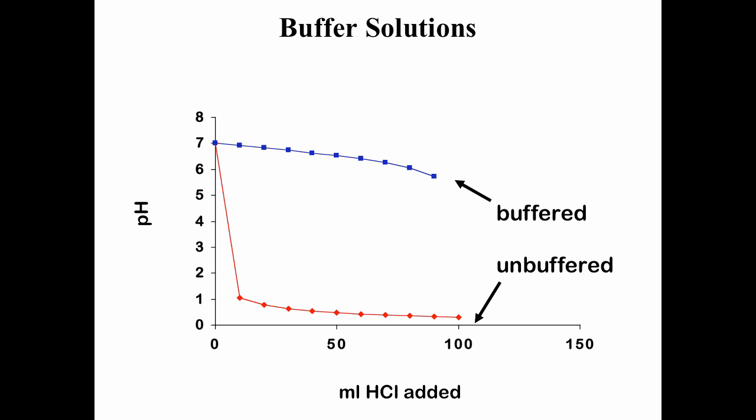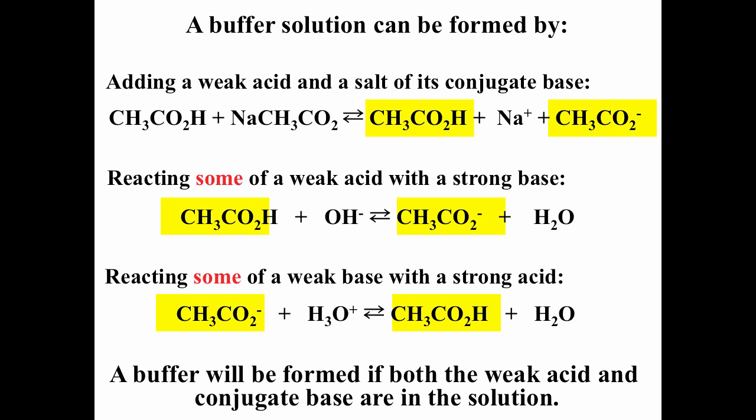There are three ways to form a buffer solution. First, take a weak acid and add the salt of the conjugate base — there's no reaction, but you form a buffer. For example, sodium acetate dissociates into sodium ions and acetate ions, giving you an acetate/acetic acid buffer. Second, react some of the weak acid with a strong base — acetic acid plus hydroxide gives acetate ion, and as long as you don't consume all the weak acid, you get a buffer. Third, take the conjugate base and react it with a strong acid — acetate ion plus hydronium gives acetic acid, and as long as you don't consume all the acetate ion, you get a buffer.